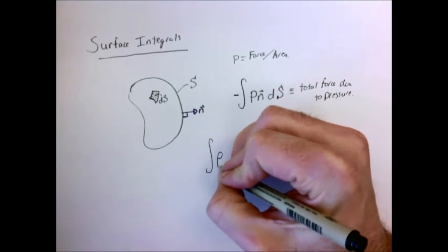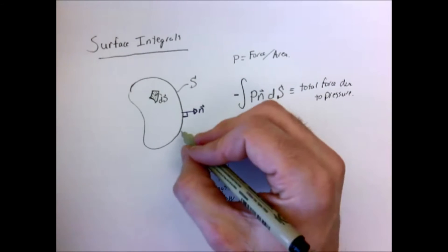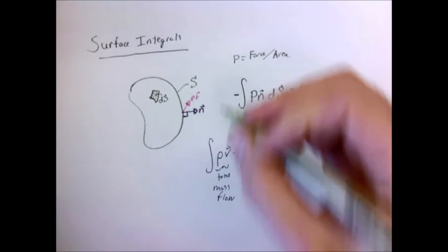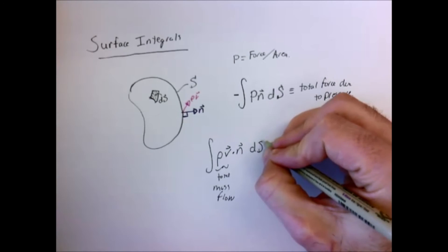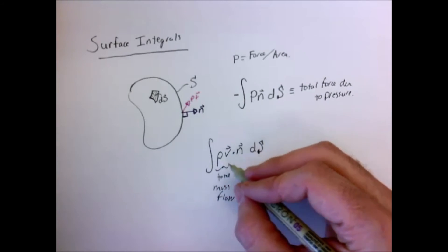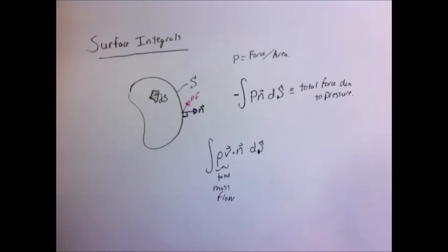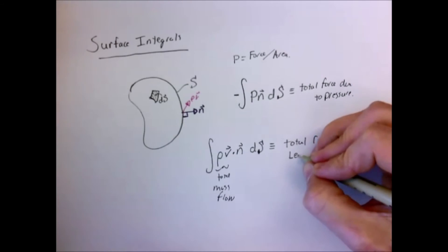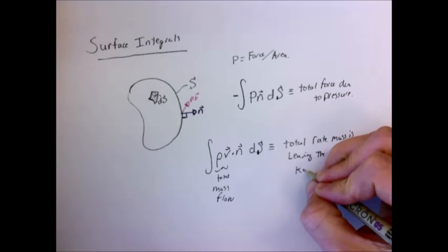Another important surface integral: recall that density times velocity dotted with the normal vector gives the amount leaving the surface. Taking rho v dot n and integrating it over every little surface element — since mass flux had units of mass per unit time per unit area — integrating over all the areas leaves us with units of kilograms per second, or mass per unit time. So integrating rho v dot n dS around the entire surface bounding the volume gives us the total rate that mass is leaving the volume.